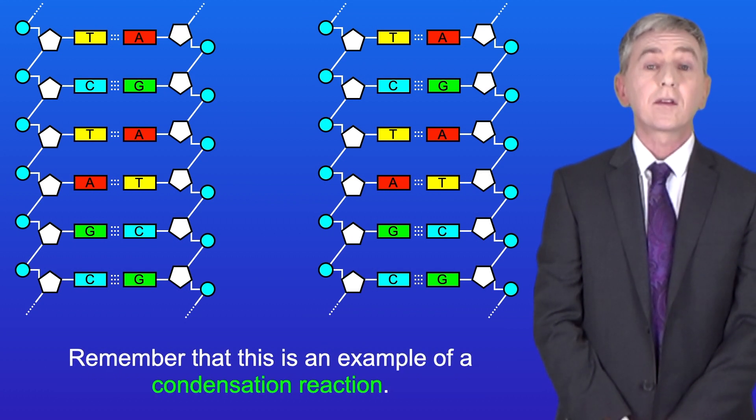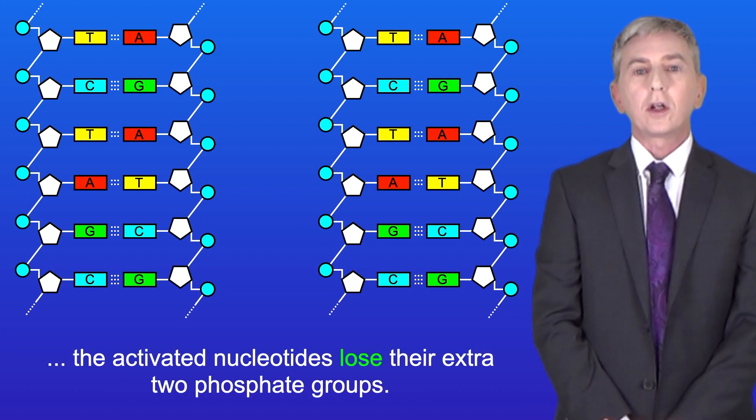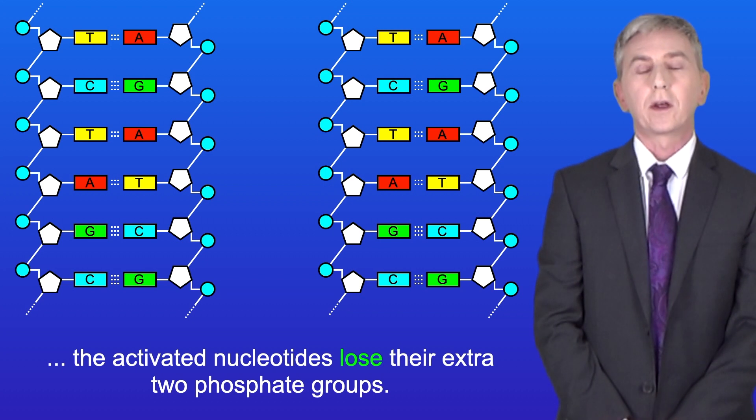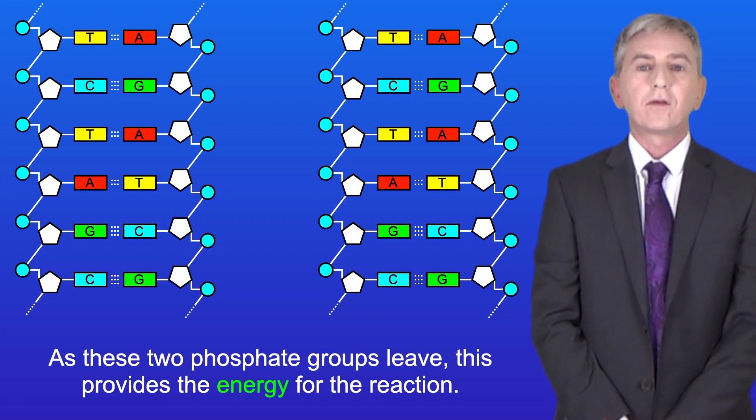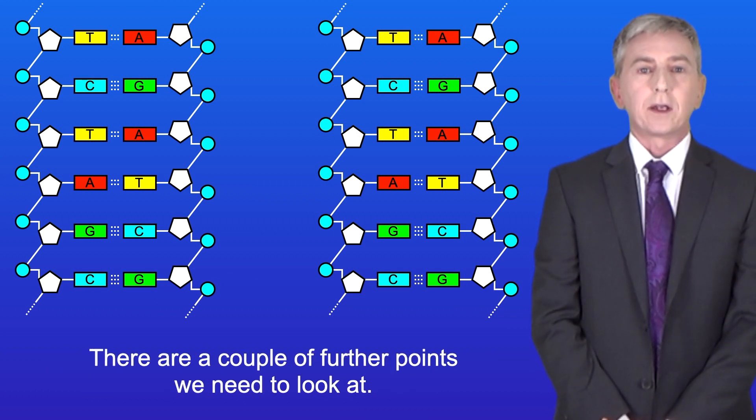Now you'll notice that when the phosphodiester bonds form the activated nucleotides lose their extra two phosphate groups. As these two phosphate groups leave this provides the energy for the reaction. Now there are a couple of further points we need to look at.